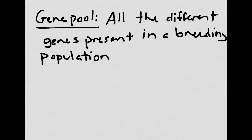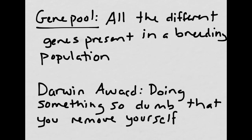The gene pool is just all of the different genes that are present in a breeding population. The idea of the gene pool inspired something called the Darwin Award, which is given annually to a person or group who do something so stupid that they've removed themselves from the gene pool — usually meaning they actually die doing it, and are no longer adding their genes to the general population. If you need a good laugh, you can check out the Darwin Awards online.